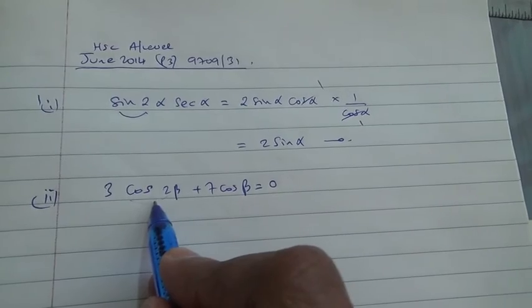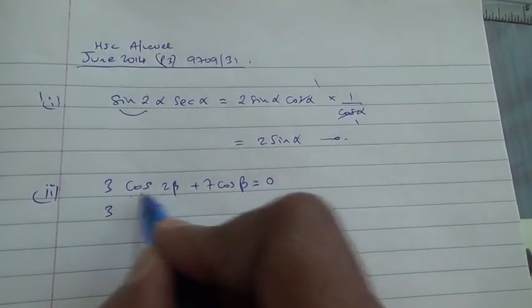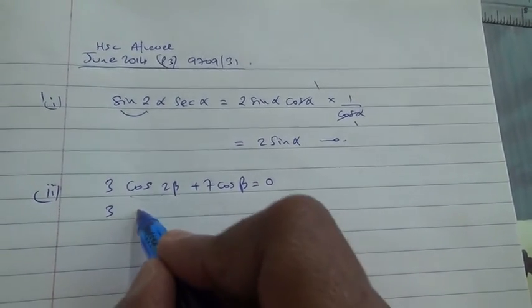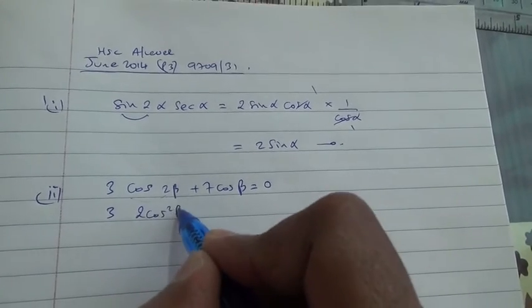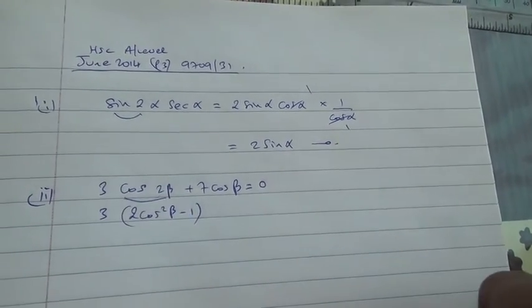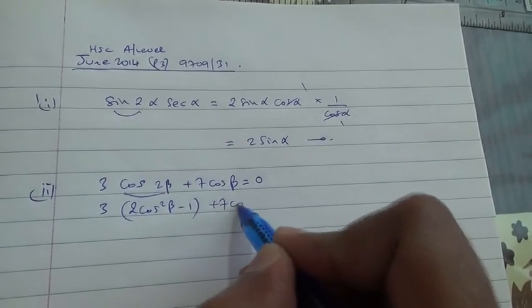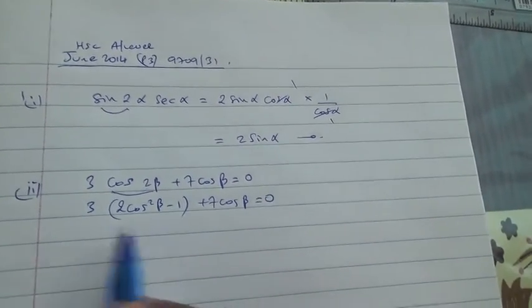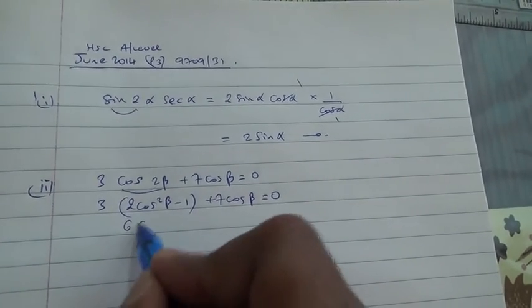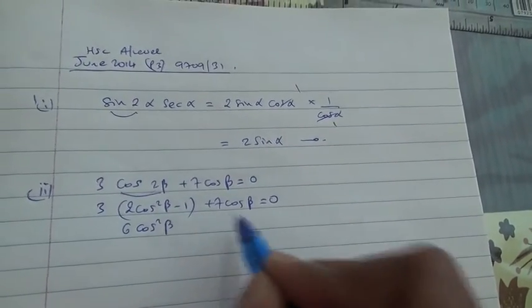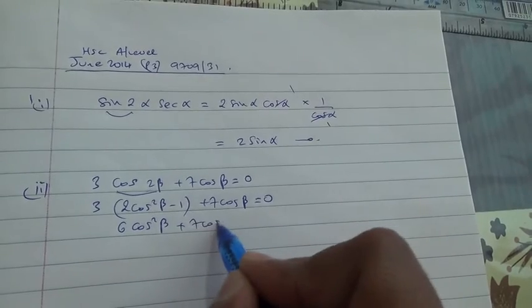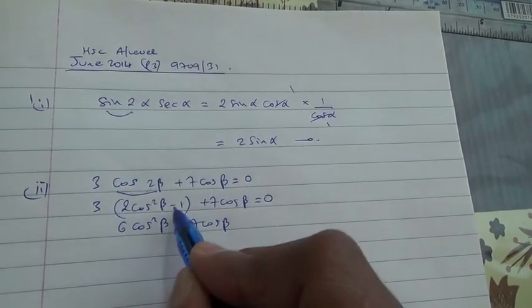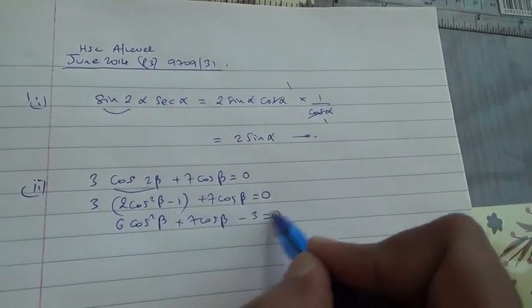Now this is double angle formula again. What is cos 2 beta? Cos 2 beta is 2 cos square beta minus 1. That's the double angle formula, plus 7 cos of beta is equal to 0. So 3 times 2 is 6 cos square beta plus 7 cos of beta, 3 times minus 1 is minus 3, is equal to 0.